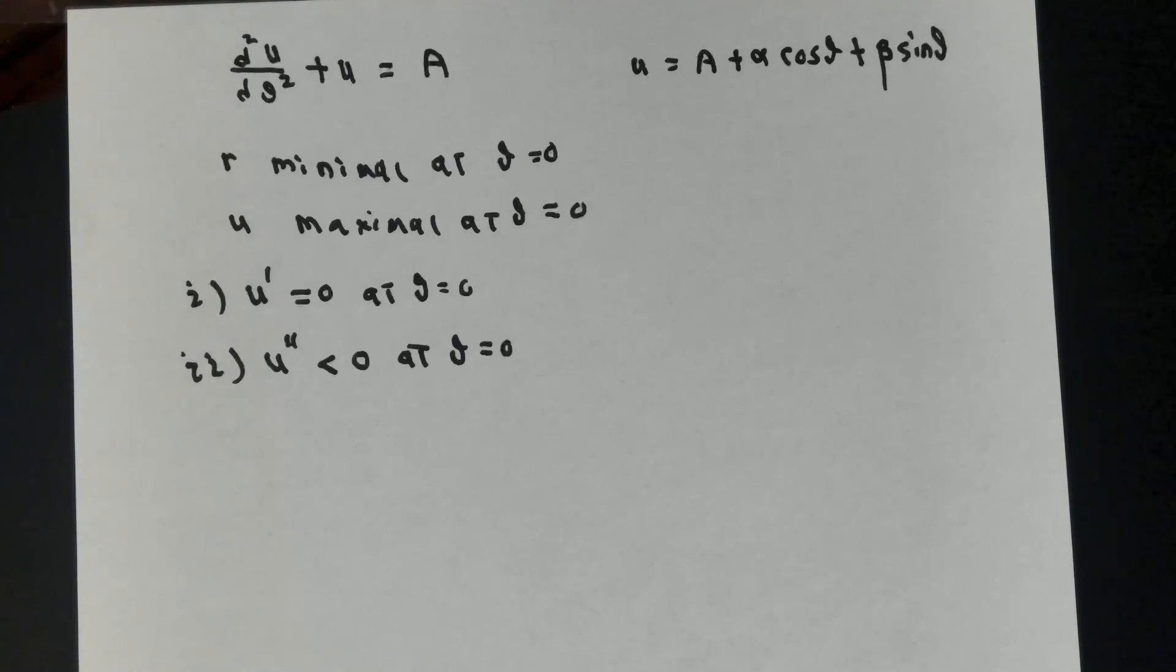For an elliptical orbit, the r-coordinate will take on a minimum value at what's called its perihelion. I'm going to set my coordinate system up so that r becomes minimal when theta is zero. U is the reciprocal of r, so u must be maximal at theta equals zero, which immediately tells me two things. Firstly, the derivative of u with respect to theta must be zero when theta is zero. Also, the second derivative of u must be negative at theta equals zero.